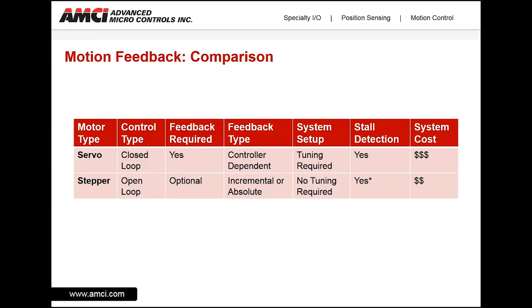Because of the present feedback, servos can have stall detection, whereas steppers — if an encoder is added — can provide some stall detection. Overall, the system cost of a servo will be slightly higher than that of a stepper for similar operation.